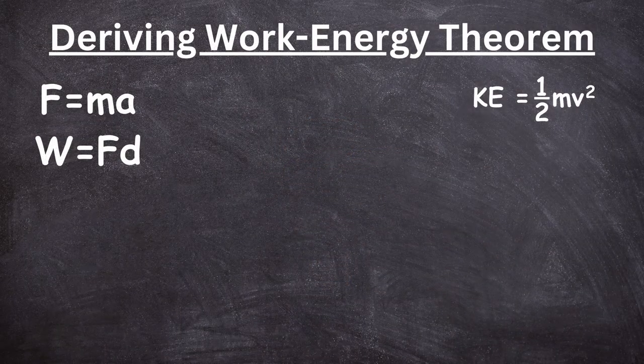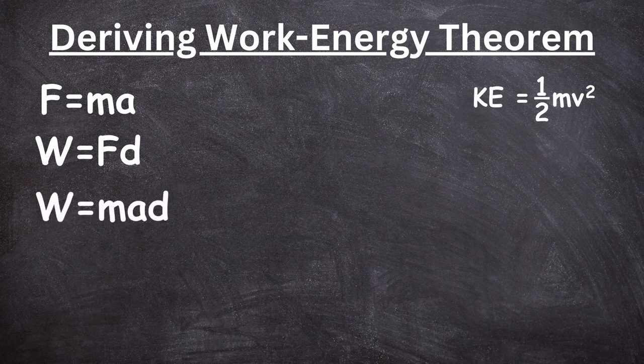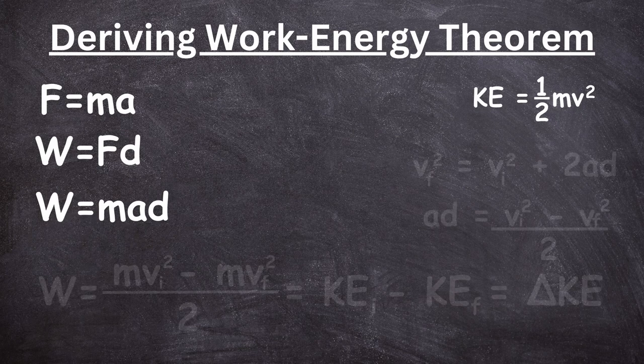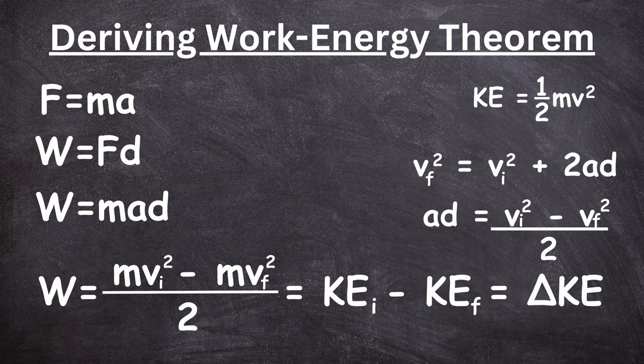Now with this equation we can actually derive the work-energy theorem. First of all, remember the equation F equals ma, and the equation work equals Fd. We can see here that F can be broken into m times a, so we can change the work equation to: work equals mad.